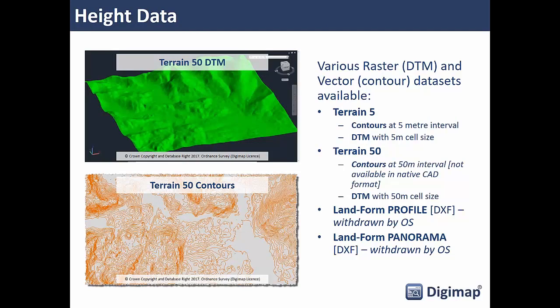Looking at Terrain 5 and Terrain 50 more closely: the screen grabs show Terrain 50 DTM — a surface model in ASCII grid files — and then the same area shown as the Terrain 50 Contours dataset looking vertically down. The core difference between Terrain 5 and Terrain 50 is the detail: Terrain 5 has 5-meter contour intervals and a 5-meter DTM cell size, whereas Terrain 50 has 50-meter contour intervals and a 50-meter cell size. For a larger area like a town or local area development plan, Terrain 50 is appropriate; for small areas, take Terrain 5 for the most detail.